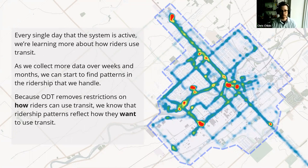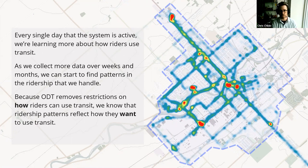The really important key piece is that because we've removed all the restrictions about how people can use transit, we know the ridership patterns we see are actually indicative of how they truly want to use transit. They're not jumping through hoops — not having to transfer between three different bus lines to get to work. They just say, 'I'm near stop A, I want to go to stop B,' request the trip, and we pick them up and drop them off. That's exactly what they want out of transit, and that's exactly what we see in the system.